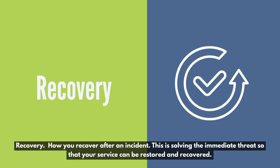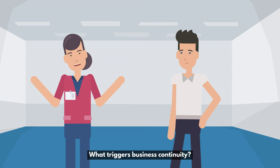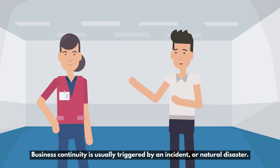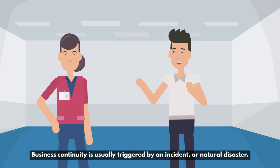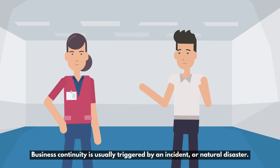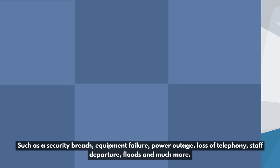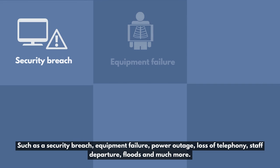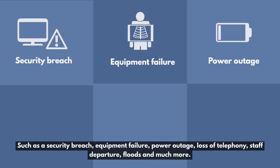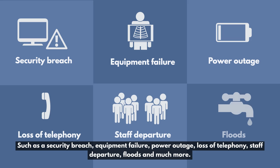What triggers business continuity? Business continuity is usually triggered by an incident or natural disaster such as a security breach, equipment failure, power outage, loss of telephony, staff departure, floods, and much more.